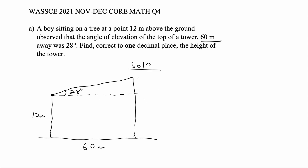We have been asked to find the height of the tower, which is h. This line here is parallel to this line here, so if this is 60 meters, this will be 60 meters too. And since this is parallel to this, from here to here will be 12 meters. We need to find the remaining portion, so let's label: this point will be N, this will be O, and this will be P.